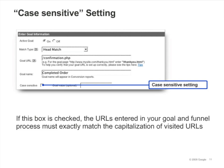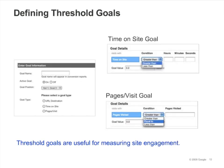Check case sensitive if you want the URLs you entered into your goal and funnel to exactly match the capitalization of visited URLs. To define a time on site goal, select time on site as the goal type. Next, select greater than or less than and enter an amount of time, for example 15 minutes.